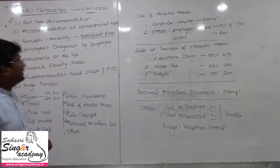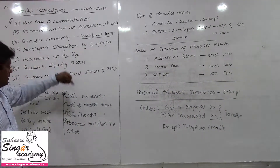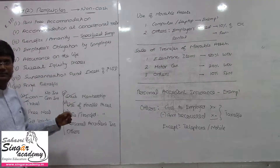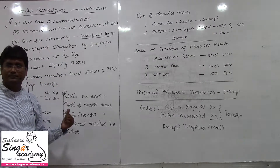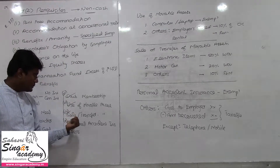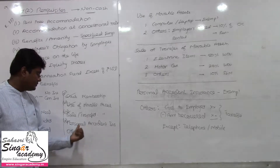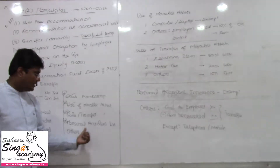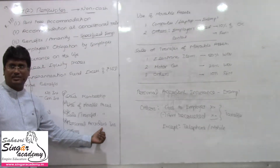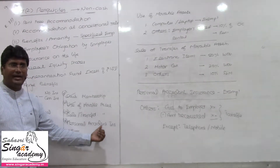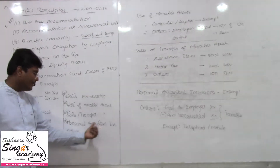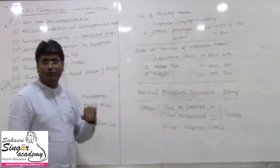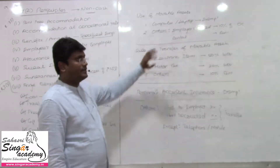Fringe benefit — use of mobile assets, sale or transfer of mobile assets, personal accident insurance, premium paid by employer for employee, and other cases. We will close off with that.